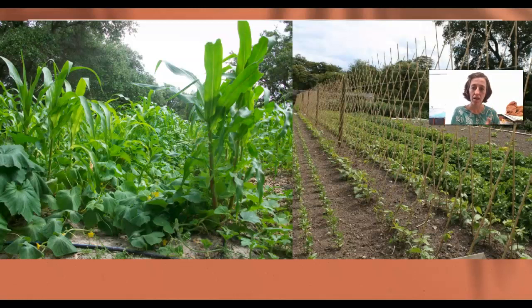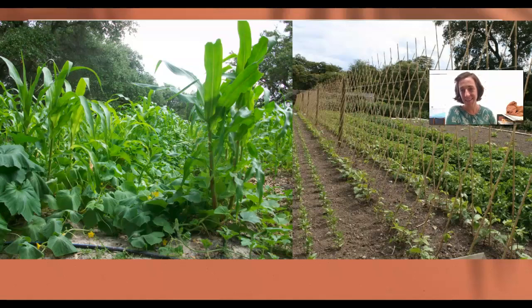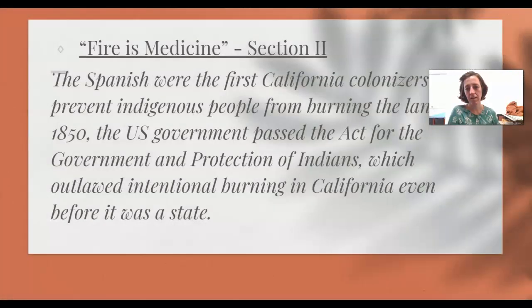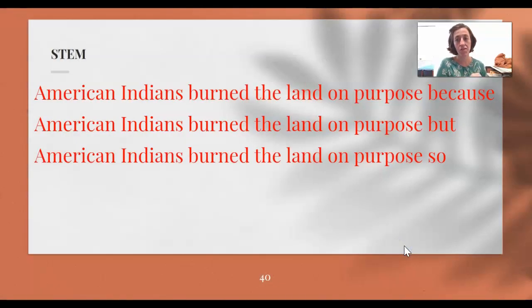And then we talked again about the gardening of these two different cultures. On the left, you have a three sisters garden where the corn, the beans, and the squash grow together, are mutually reliant upon each other, and don't need to be tended as much. On the right, you have a British-style farm with fences and rows of plants. Then we read the article — just the first half, like I said. And there is your stem. And that's it.